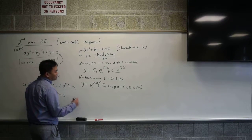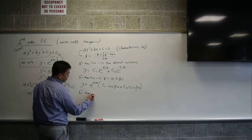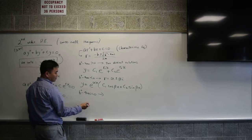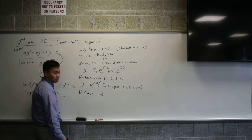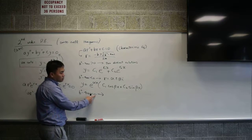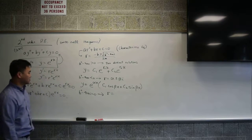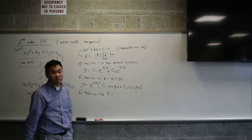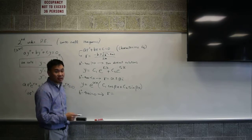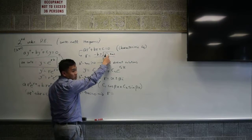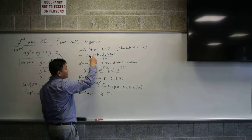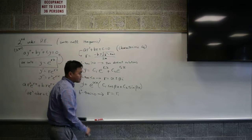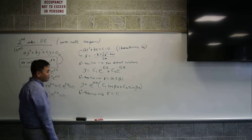The real problem happens when b²−4ac = 0. What happens to r in this case? The square root of zero is zero, so you only have one solution: r = −b/(2a). This is a single solution, and that causes a headache for a second order equation.